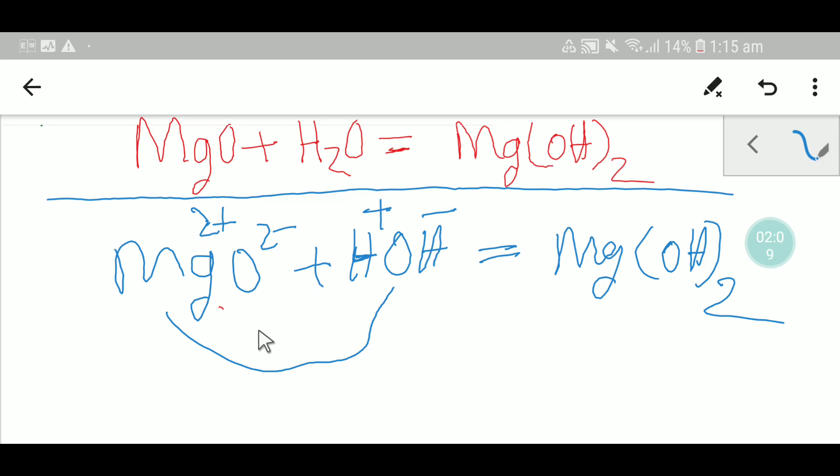So now we will look at the number of hydrogen. Here we have two. Here we have also two. So hydrogen is balanced.